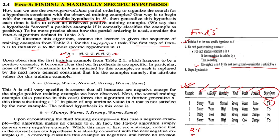The first training example is a positive example and it becomes clear that our hypothesis is too specific. The algorithm says: if constraint ai is satisfied by x, do nothing — but it's not satisfying at all because we have phi here and the example is sunny, warm, normal, strong, warm, same. So we replace each phi with the more general constraint satisfied by x: sunny, warm, normal, strong, warm, same.